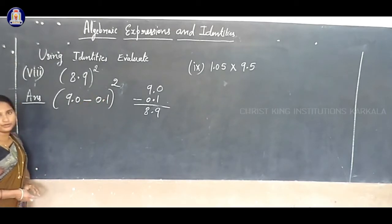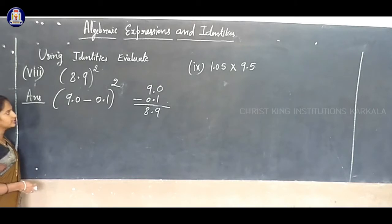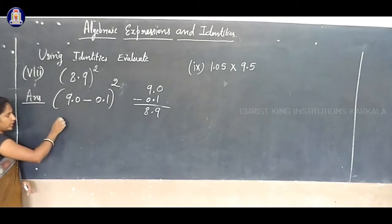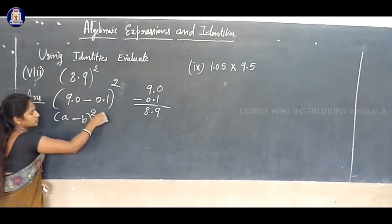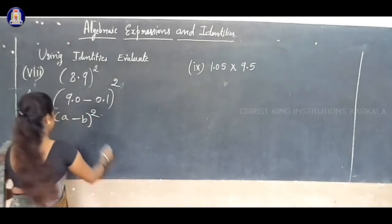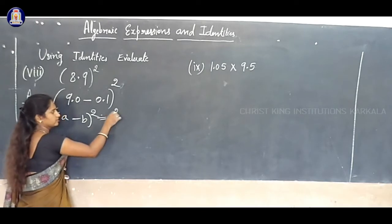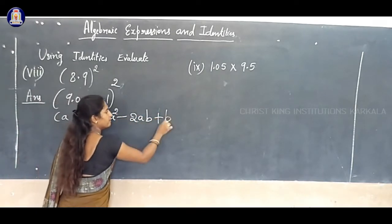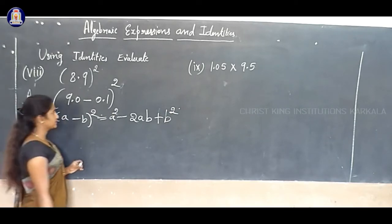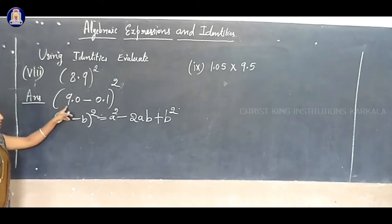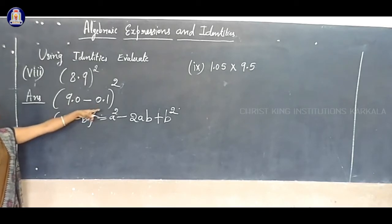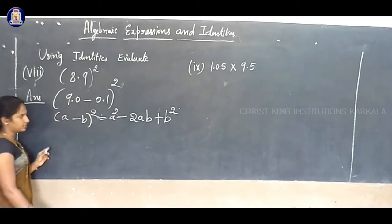So now, see the question - it is in the form of the (a minus b)² identity. So here, a minus b whole square is equal to a square minus 2ab plus b square. What is A? In place of A, the number is 9. A is 9. B is 0.1. So substitute the values.